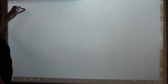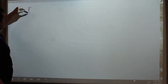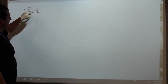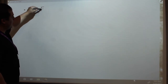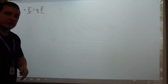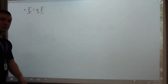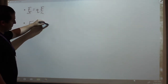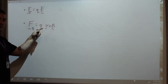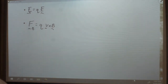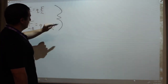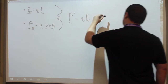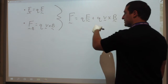We already know that charges experience a force when they're in an electric field. The electric force F_E is the charge in question multiplied by the electric field. Evidently, charges also experience a force when they're in a magnetic field, but only when they're moving — it depends on them actually having a velocity. So the total force F is the sum of these two: F_E plus Q times v cross B. This is the Lorentz force.